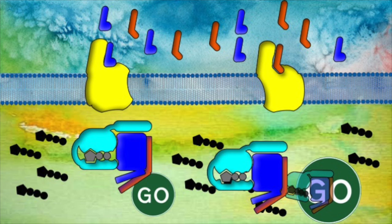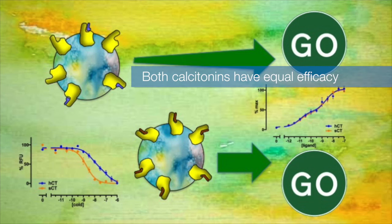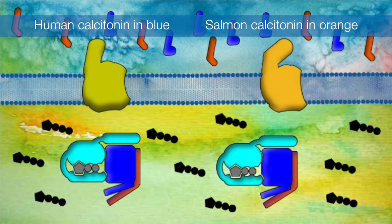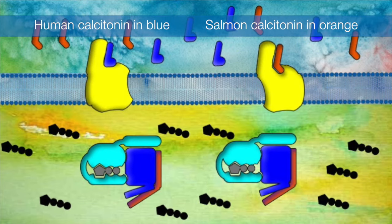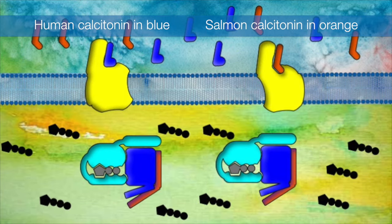In the last year or so, it has been proposed that G-proteins themselves are conformationally dynamic. For the calcitonin receptor, a class B GPCR, we observed that the endogenous ligand, human calcitonin, had lower affinity than the clinical agonist, salmon calcitonin. But both ligands could stimulate the same magnitude of cellular response.